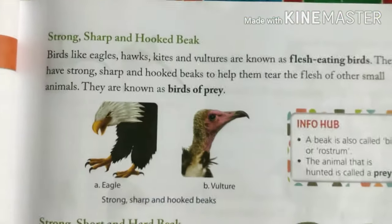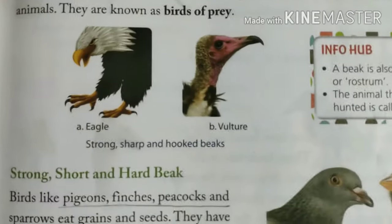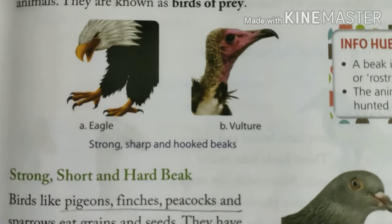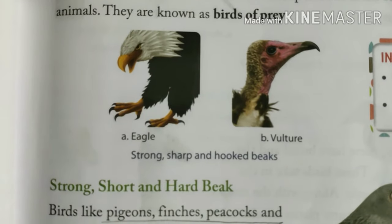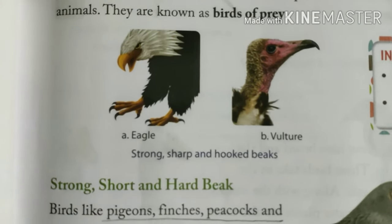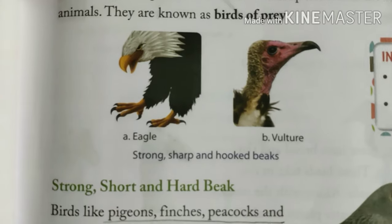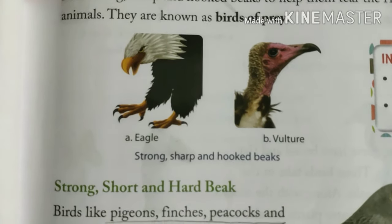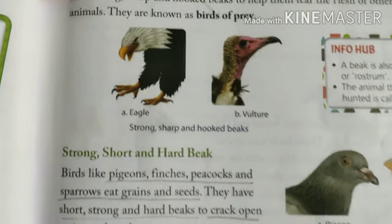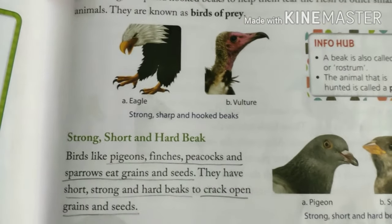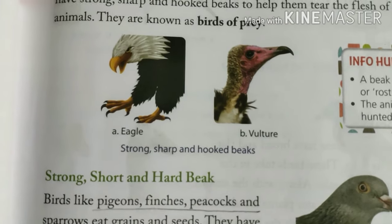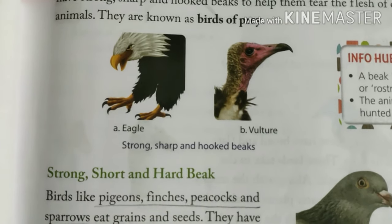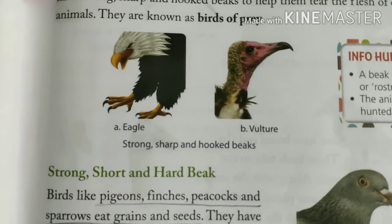The first type of beak is a strong, sharp, and hooked beak. Birds like eagle and vulture have a very strong, sharp, and hooked beak. The shape of the beak is hooked. These birds have a very strong beak so that they can tear the flesh of other animals and eat it.